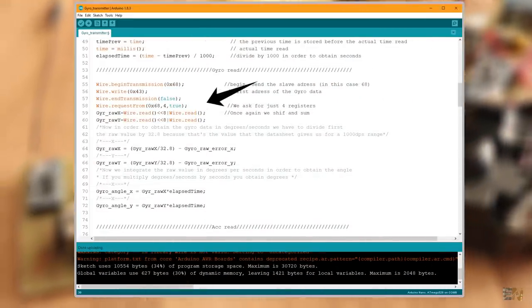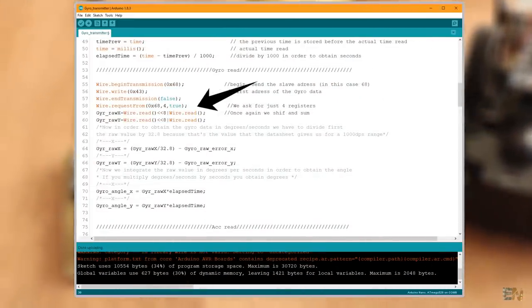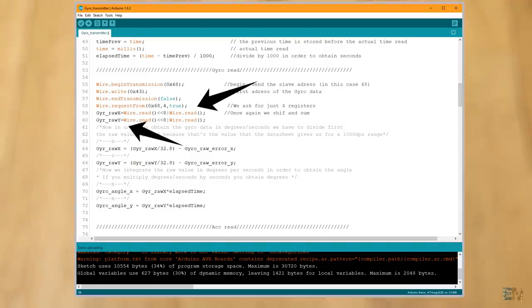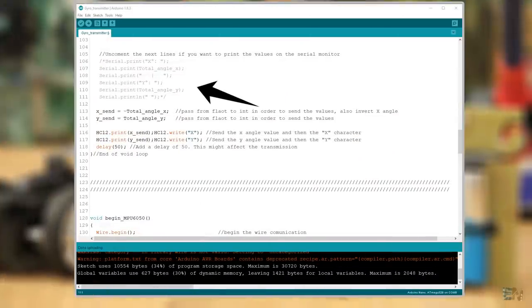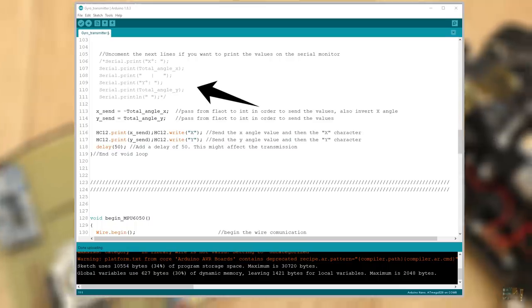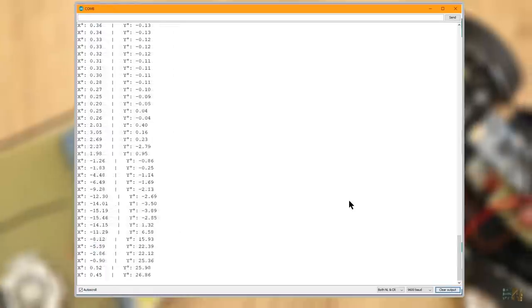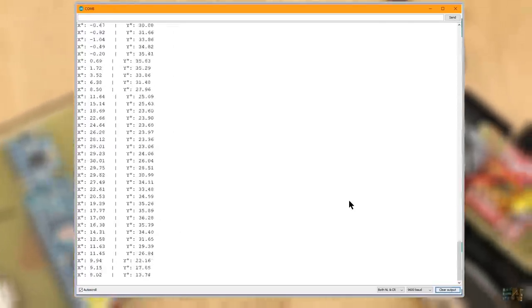To read the IMU data, I'm using some I2C lines with the wire function. I ask for both acceleration and gyro data and then I calculate the real angle. If you uncomment these lines here and open the serial monitor with the Arduino connected to the PC, you will be able to see the angles while moving the controller around.